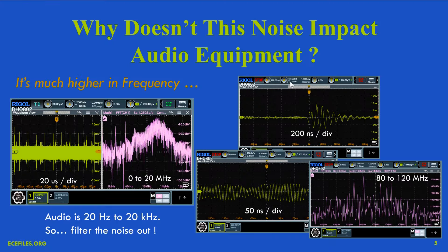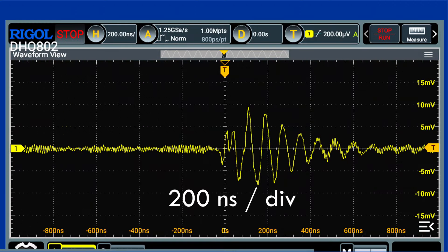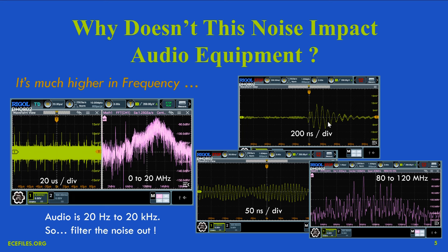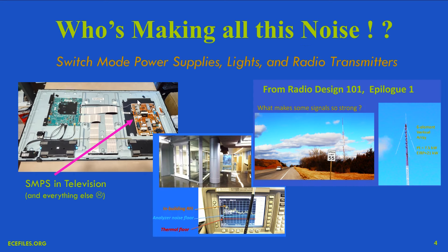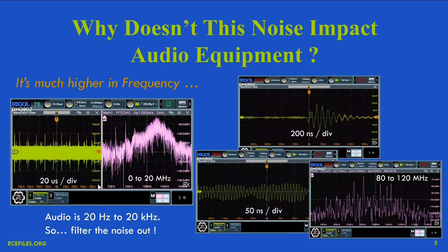I've run the time base out to 200 nanoseconds per division as a zoom-in on one of these spikes, and we can see a somewhat sinusoidal waveform — but it's kind of noisy and not perfect. That's probably what accounts for the concentration around 10 to 13 megahertz. Each cycle here is about 100 nanoseconds long, so that correlates. I suspect it's some ring-down from switching waveforms within one of these switch mode power supplies. There are many of these in the house — here we're just zoomed in on the noise caused by one of them.